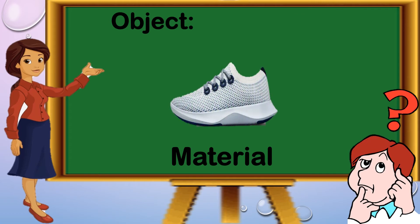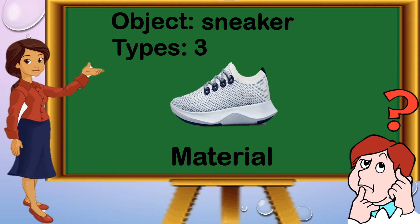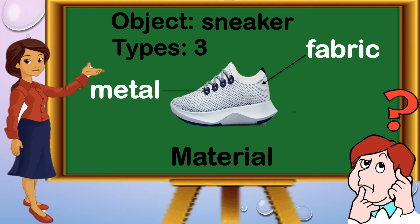Another object is the sneaker or rubber shoes. We have three types. First, fabric. Another one, metal. And the lower portion is made up of rubber. The three types are fabric, metal, and rubber.